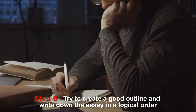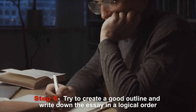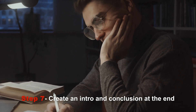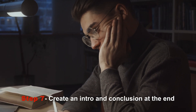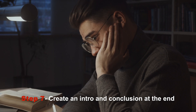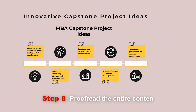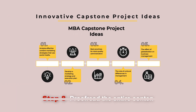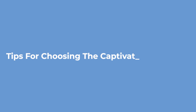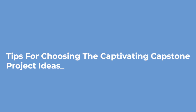Step six: try to create a good outline and write down the essay in a logical order. Step seven: create an introduction and conclusion at the end. Step eight: proofread the entire content. These are the tips for choosing captivating capstone project ideas.